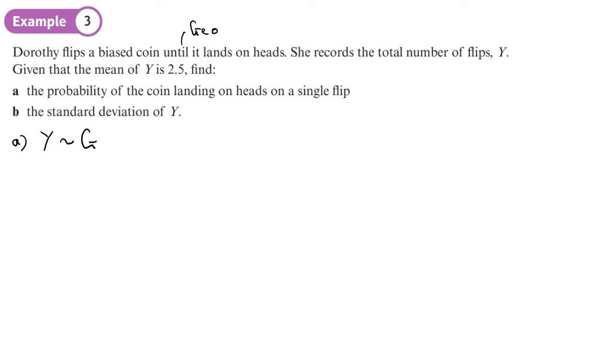And that's our geometric distribution. We're trying to find p, but we're told that the mean of X is 2.5, and to find the mean we do 1 over p. Very, very easy. So p is going to equal 1 over 2.5, and 1 divided by 2.5 we get 0.4. So remember, probability—we shouldn't get an answer bigger than 1.